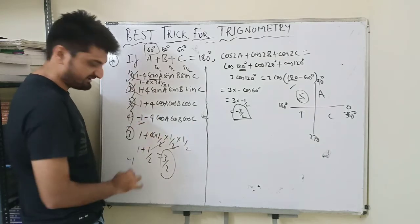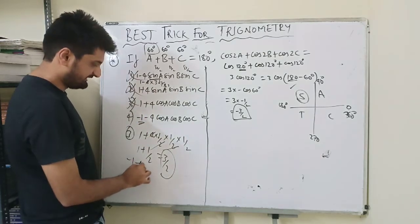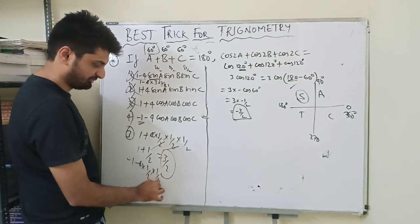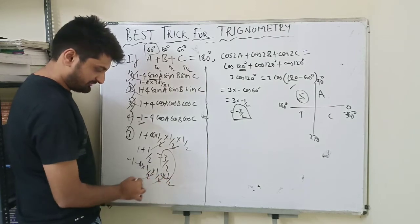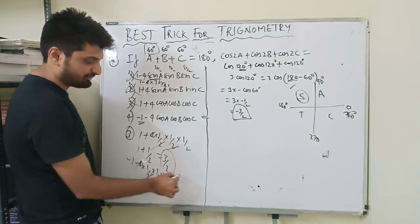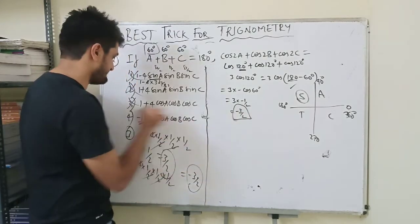Now we will check this again. This will be minus 1 minus 4 into 1 by 2, 1 by 2, 1 by 2—4 cancel. Minus 1 minus 1 by 2 is minus 3 by 2, which is same as the question.